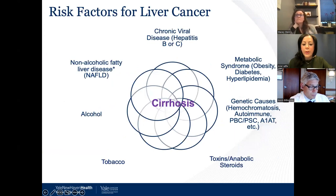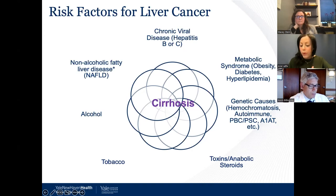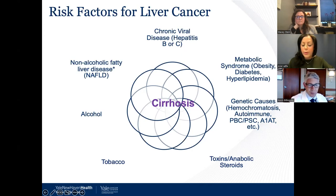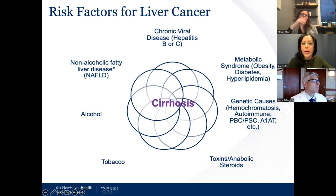Although there is a rise in liver cancer cases in patients with metabolic associated liver disease without cirrhosis, the vast majority of cases still occur in patients with advanced liver disease or cirrhosis. In the United States, the most common causes include alcohol-associated liver disease, metabolic liver disease, and chronic viral hepatitis B and C, along with various genetic or autoimmune conditions. Tobacco use and anabolic steroids can also increase risk. These are the factors we look for when deciding if someone should be evaluated and screened.